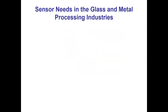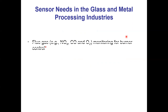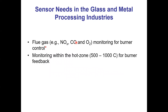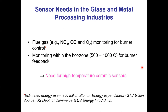There are needs for gas sensors in glass and metal processing industries. You're trying to detect flue gases — species like NOx, CO, and hydrocarbons — and monitor emissions burner by burner in a glass melting furnace or commercial-scale metal heat treating furnaces. The monitoring environment is harsh; the temperature range is anywhere from 500 to 1,000 degrees Celsius at the burner. You need high-temperature ceramic sensors for this kind of application, and the Department of Energy is interested because these are very energy-intensive processes.